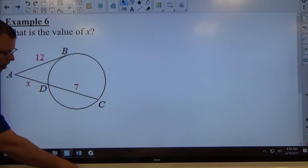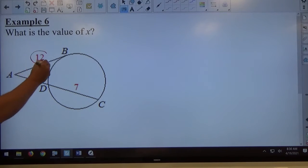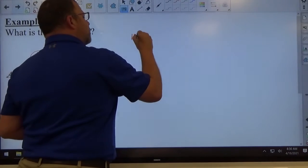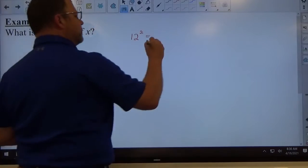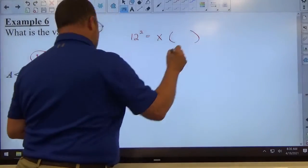This is a tangent with a secant so our rule for tangents is we square the tangent. So 12 is the tangent length so we're going to do 12 squared on the left and then the secant part we're going to do the outside part which is x times the entire thing.